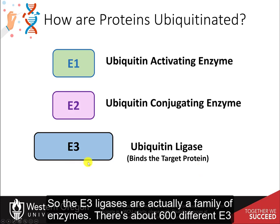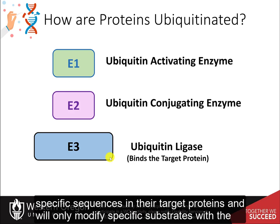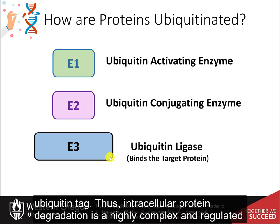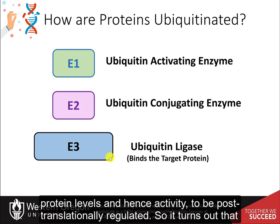The E3 ligases are actually a family of enzymes. There are about 600 different E3 ligases that exist in mammalian systems, based on bioinformatic data. E3 ligases recognize specific sequences in their target proteins and will only modify specific substrates with the ubiquitin tag. Thus, intracellular protein degradation is a highly complex and regulated system, similar to that of DNA transcriptional activation, providing an elegant way for protein levels, and hence activity, to be post-translationally regulated.